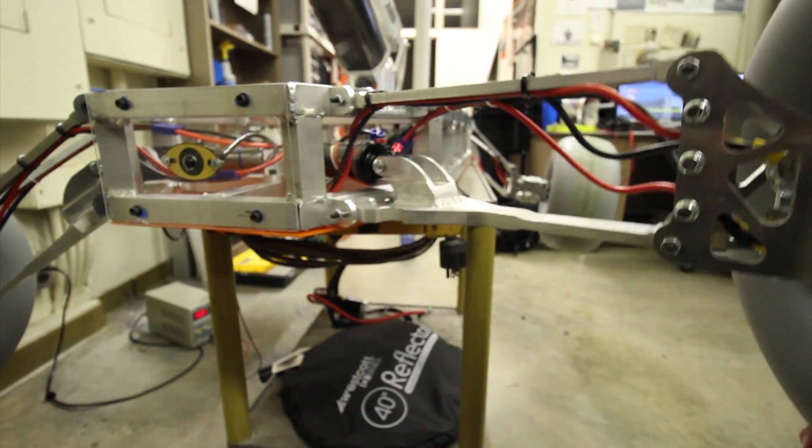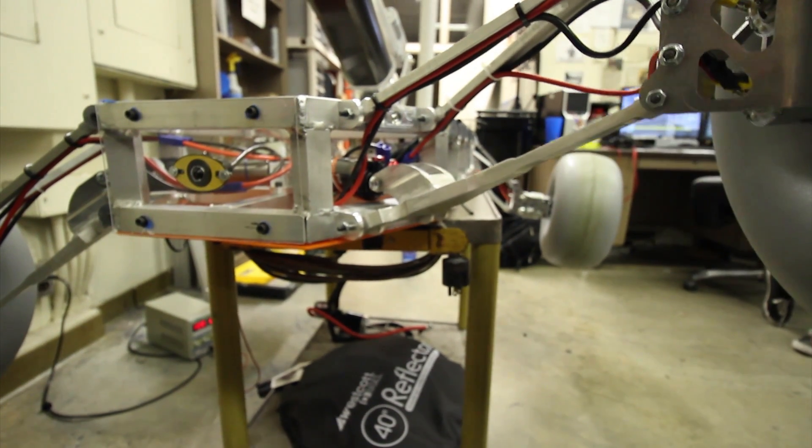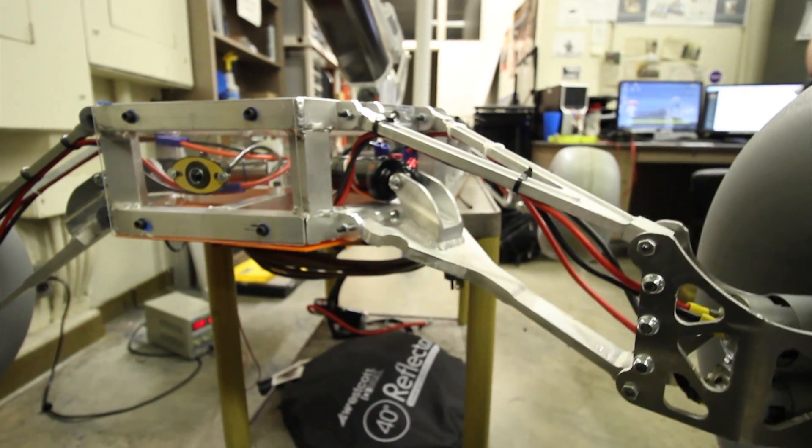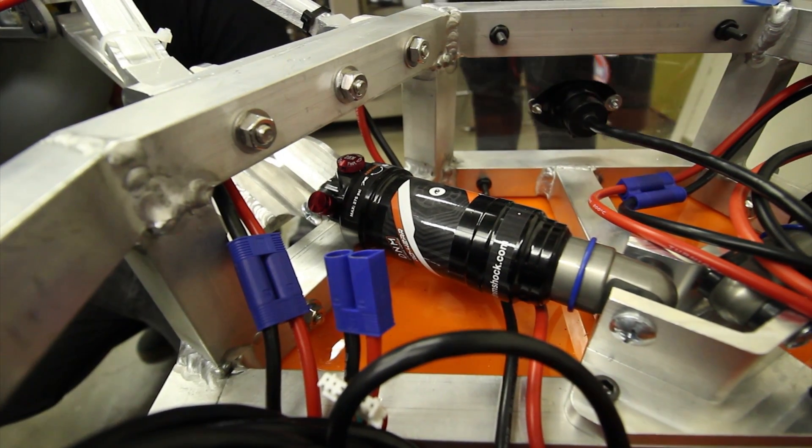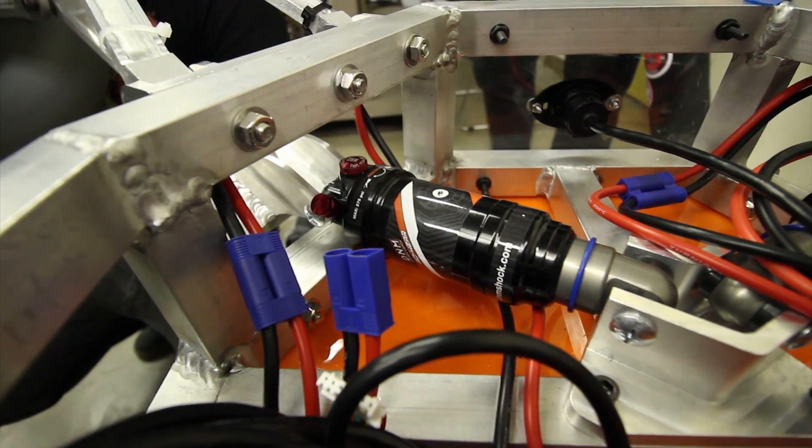The suspension is fully independent and comprised of parallel upper and lower control arms in a four-bar linkage configuration. We have also adopted an inboard suspension system with the shocks attached to the lower control arm and are fully enclosed in the chassis.